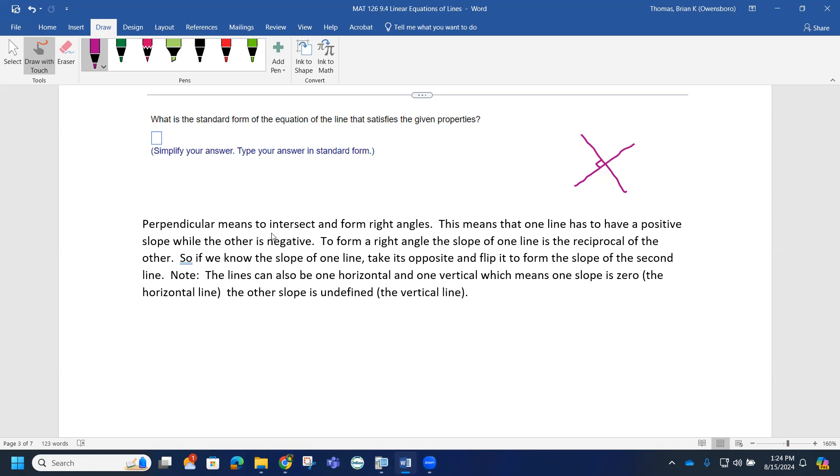Perpendicular means to intersect to form right angles. This means one of the lines has to have a positive slope while the other is negative. Notice how one's going up, that's a positive slope. One's going down, that's a negative slope.